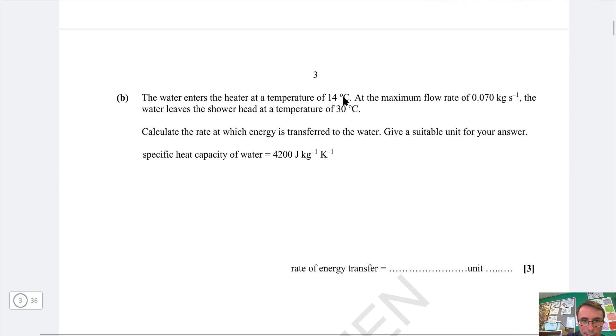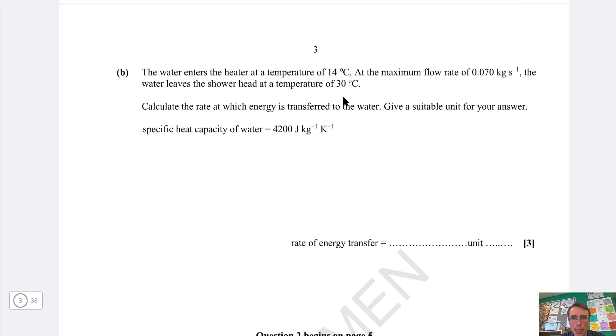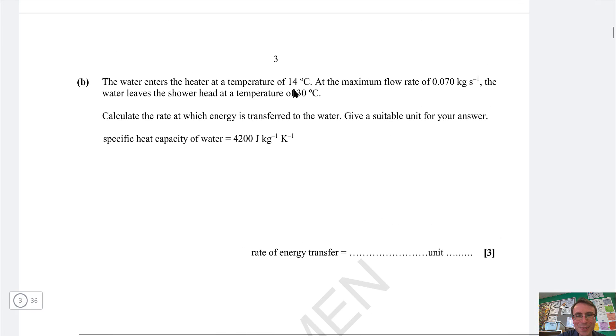On to the next one. The water enters the heater at a temperature of 14 degrees C at a maximum flow rate of 0.07 kilograms. The water leaves the shower head at a certain temperature. As soon as I see the change in temperature I'm pretty certain that I'm going to have to use E equals mc delta theta.